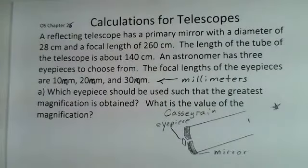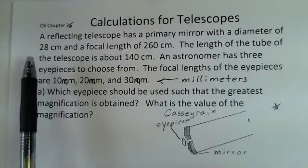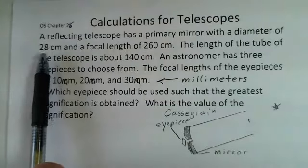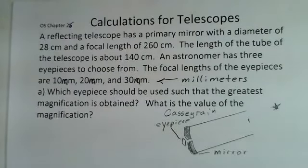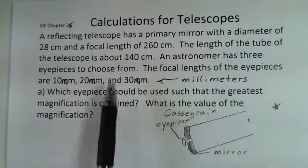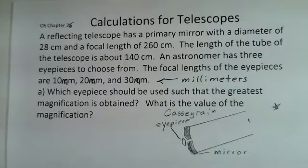Professor Clements with you as we discuss telescopes and their optical properties. Suppose we have a telescope with a primary mirror (the objective) that has a diameter of 28 centimeters and a focal length of 260 centimeters. It's constructed with a tube that is 140 centimeters long.